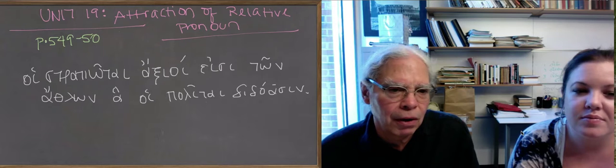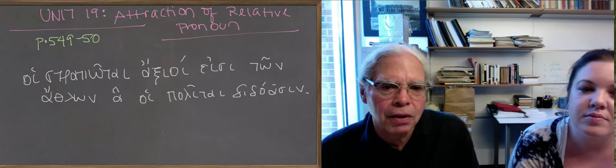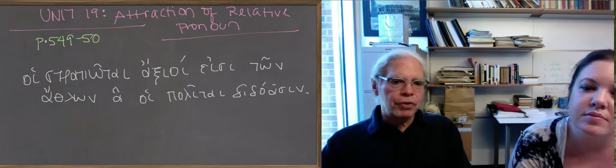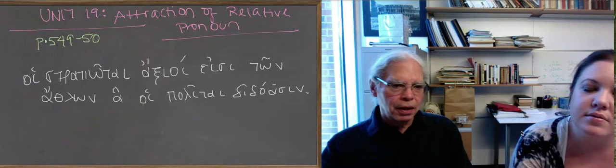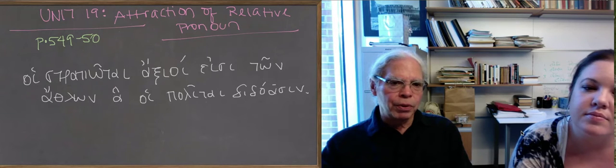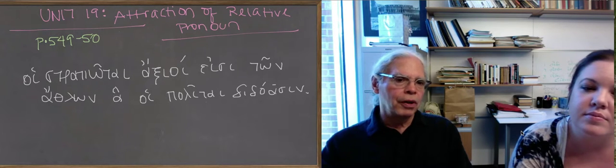Now, when we come to the relative clause, we have ha, hoipoditae, dedoasin. There's an explicit subject, hoipoditae, and so ha has to be a direct object. It can't be the subject of the verb, which is besides plural, dedoasin.